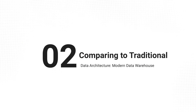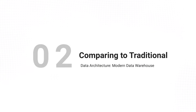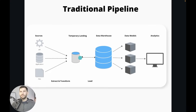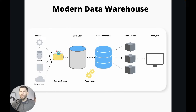You might be thinking this sounds very similar to a traditional pipeline, and it is. But a big difference here is that in a traditional pipeline, the temporary landing zone gets cleared with every run — every time you do your batch run, it clears out and starts over. Whereas with the modern data warehouse, you're just loading it and keeping it in the data lake. It's just a historical log — it's constantly growing, it's not getting cleared out, and the transformations pull from there as needed for that particular day or hour.